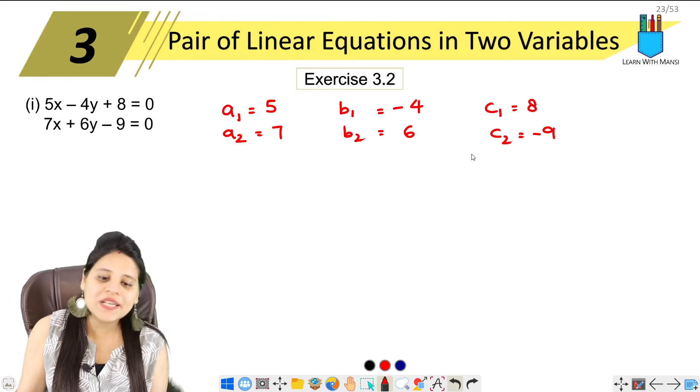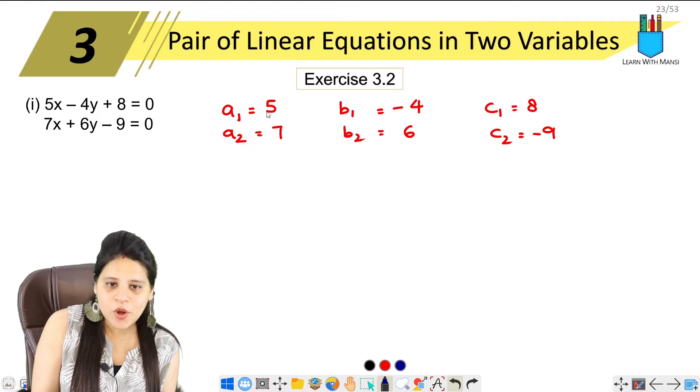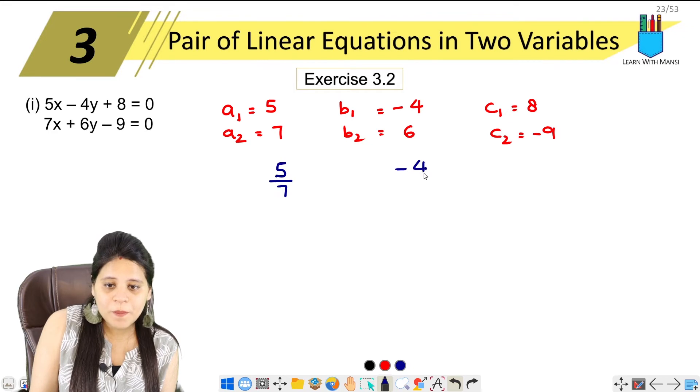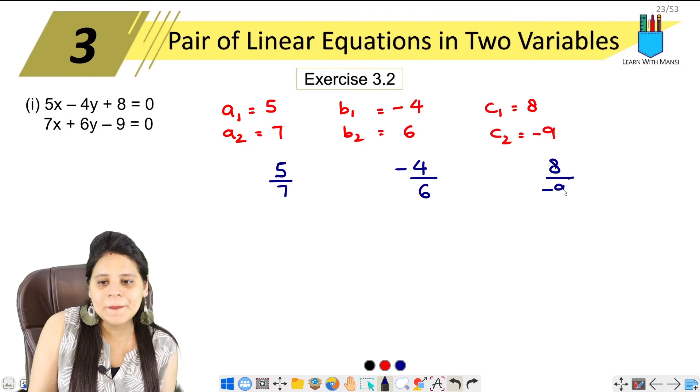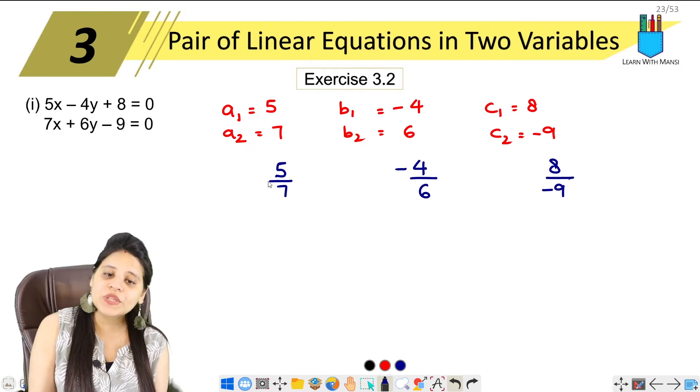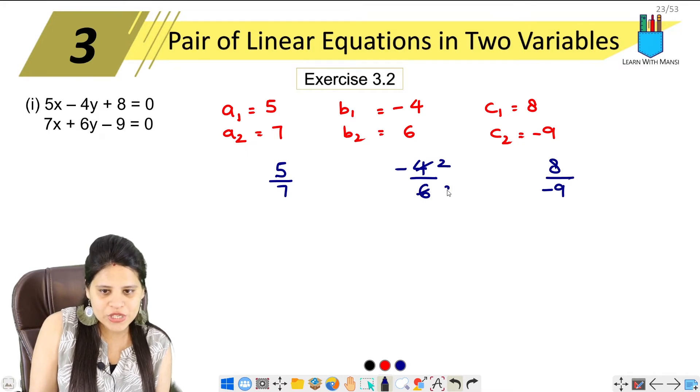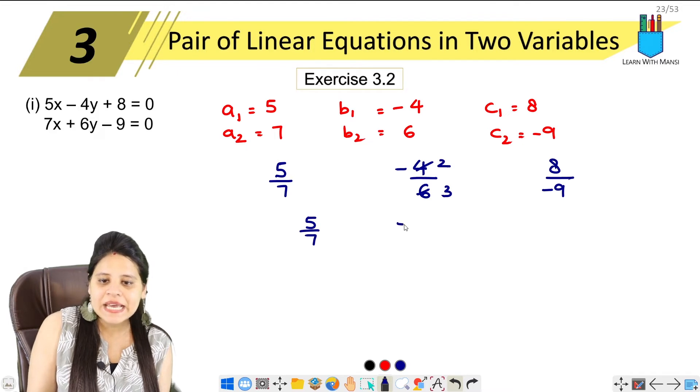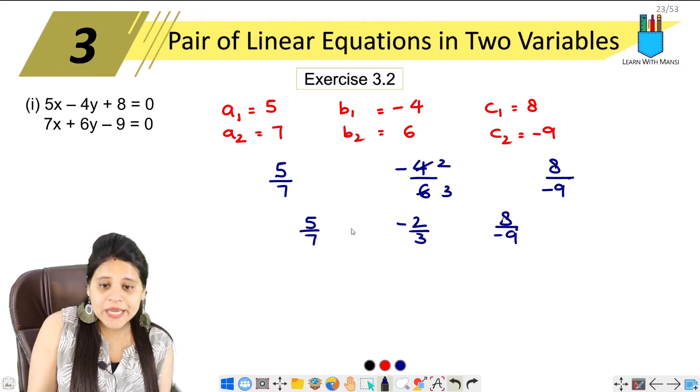Now let's check. a₁ upon a₂ means 5 upon 7. b₁ upon b₂ is minus 4 upon 6, and c₁ upon c₂ is 8 upon minus 9. So let's check. This will simplify to 5 upon 7, this becomes minus 2 upon 3, and this is 8 upon minus 9.